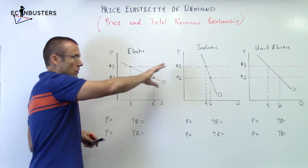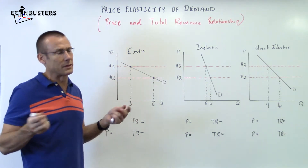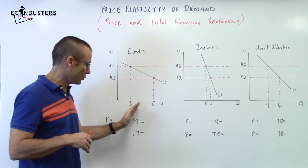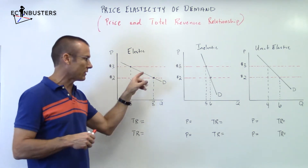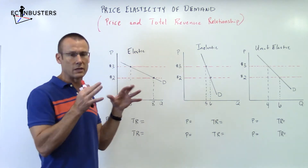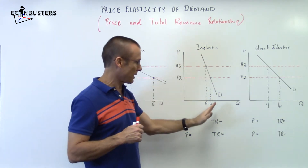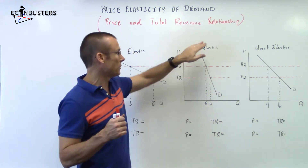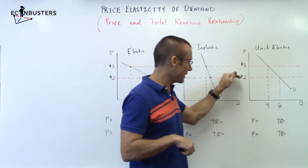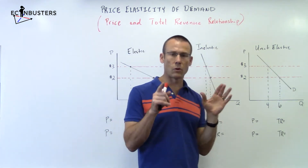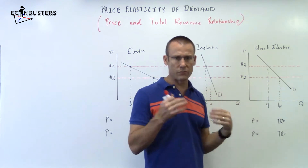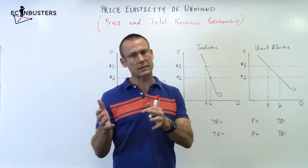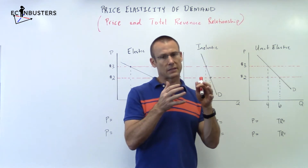I've got three curves already up here. A flatter demand curve — look how much QD is responding to a price change — that's elastic. A flatter demand curve means elastic, responsive QD. Inelastic: QD change is not all that big for a fairly big change in price, not very responsive. And then we've got a unit elastic situation. A quick warning: a 45-degree demand curve is still elastic at some portions, unit elastic at a certain spot, and inelastic at other portions.